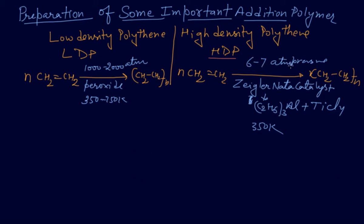In low density polyethylene we are using peroxide as a catalyst. Here we are using Ziegler-Natta catalyst which is formed of triethyl aluminum and titanium tetrachloride. The temperature range is 350 to 750 Kelvin for both. So my dear students, what is the difference? The atmospheric pressure and catalyst.